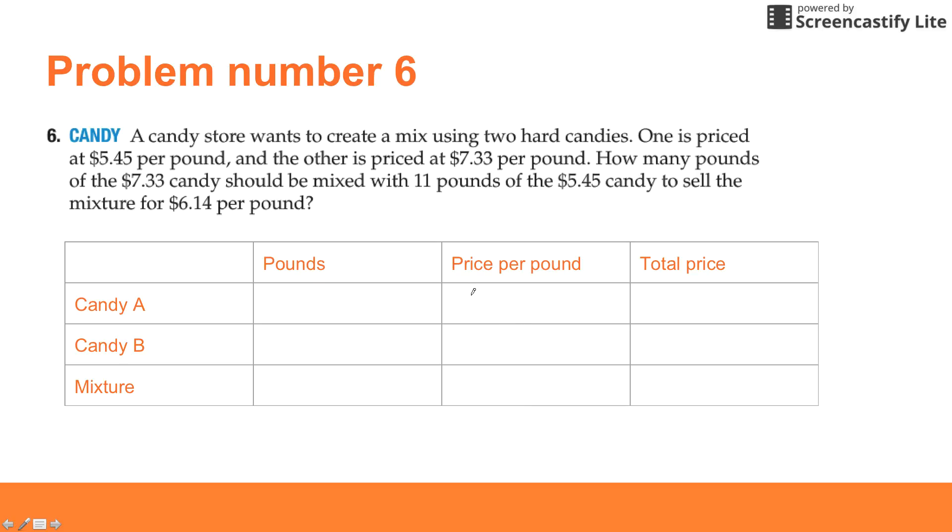Since they give us all three prices per pound, let's start by filling that in. We've got one type of candy, we'll call that Candy A, and that's going to be at $5.45 per pound. I'm doing this on my home computer without my tablet to write on, so forgive my handwriting. We've got another one at $7.33 per pound.